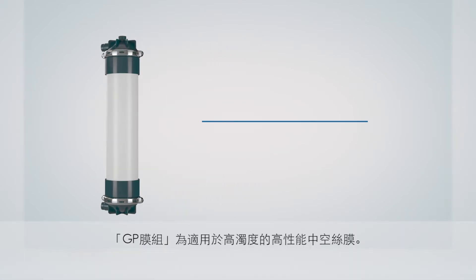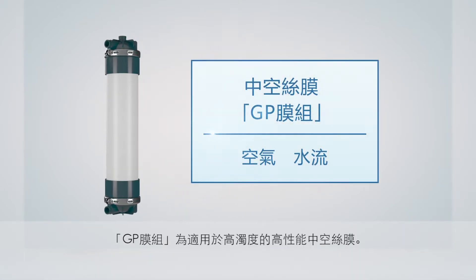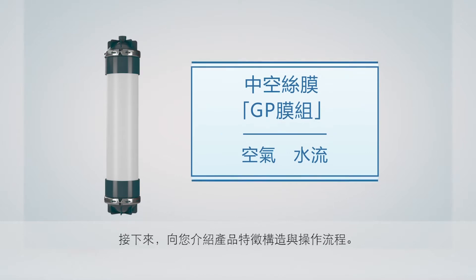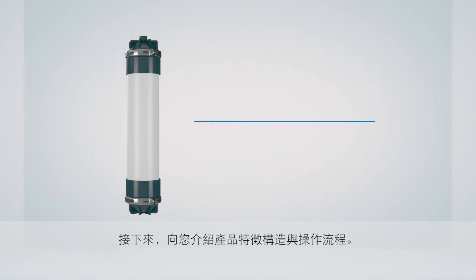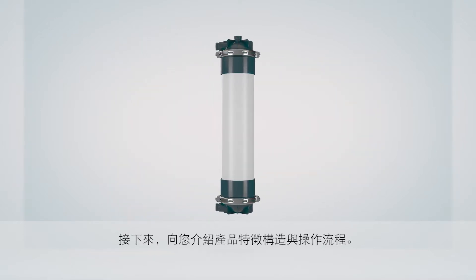The GP module is a high-performance hollow fiber membrane module applicable for high-turbidity water. Here we will outline the features of the module structure and the operation process.